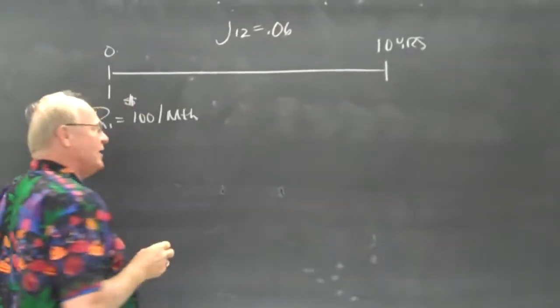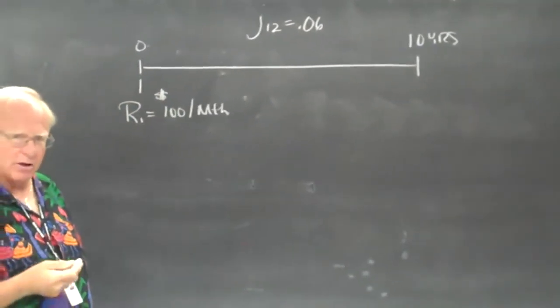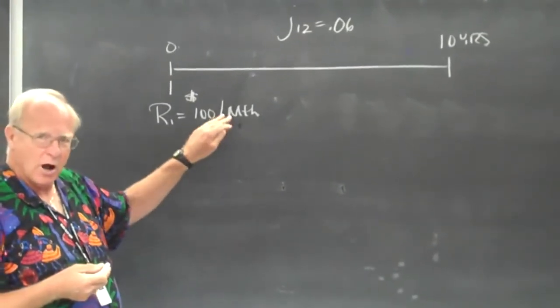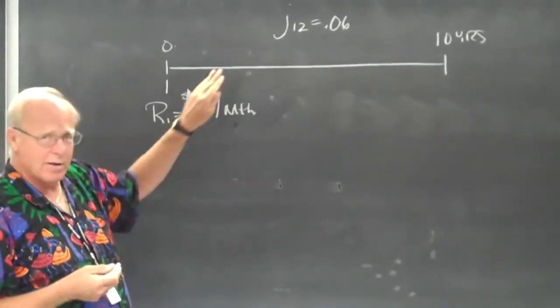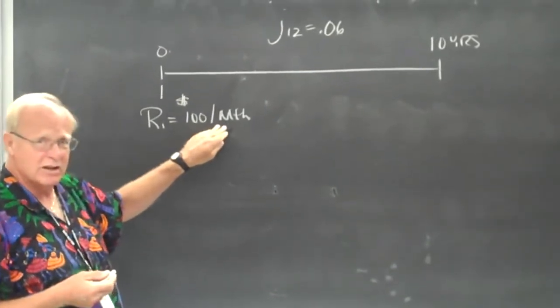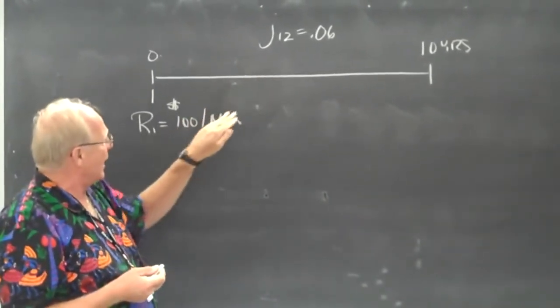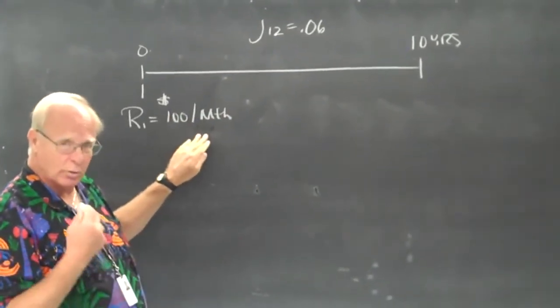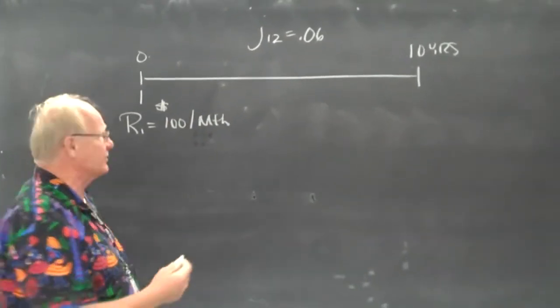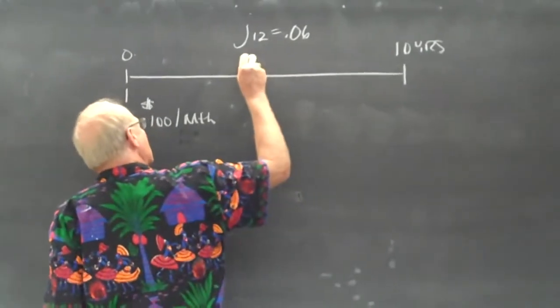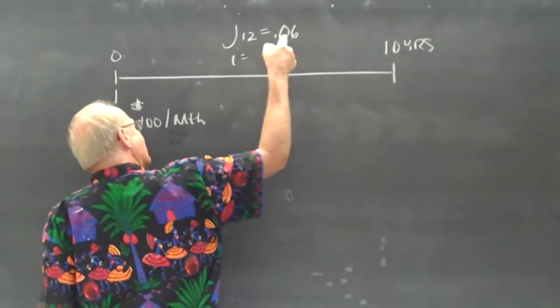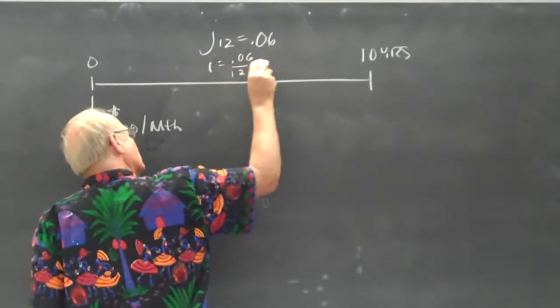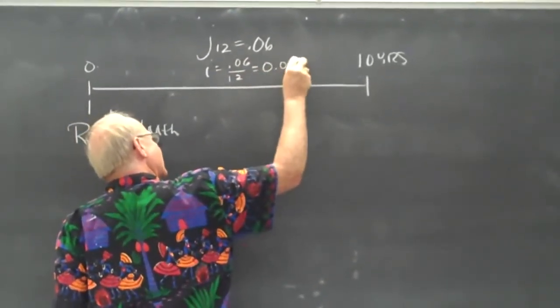Now the simple case, meaning the frequency of compounding interest matches with the frequency of payments. Always match the frequency of compounding interest to the frequency of payments. In this case it's the simple case because it's J12 and it's monthly. So I is, remember, J divided by M. So 0.06 divided by 12, which is 0.005 per month.